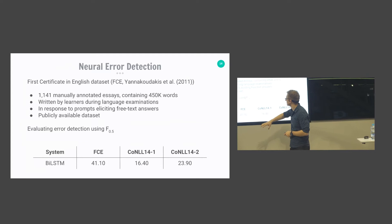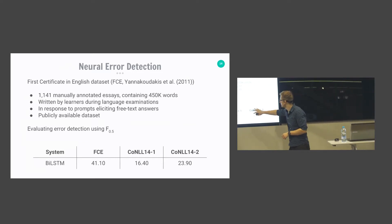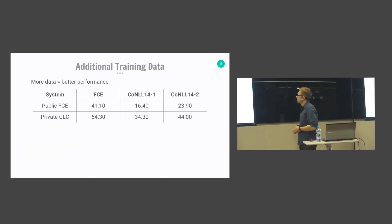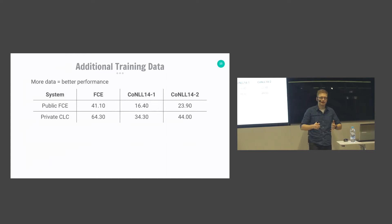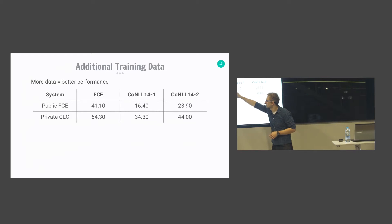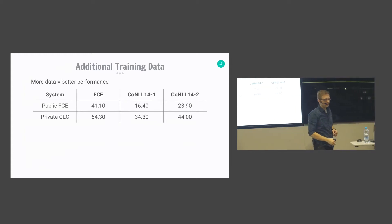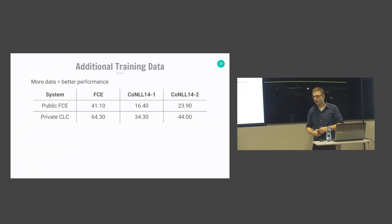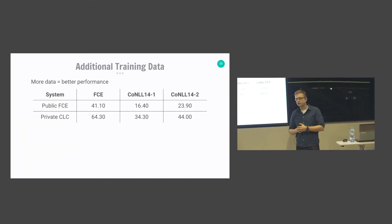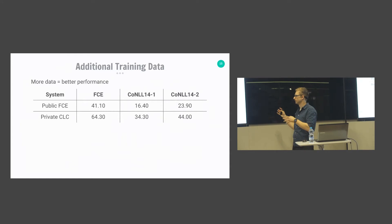Our baseline gets about 41% F0.5 on the FCE dataset. Training with the private Cambridge Learner Corpus achieves considerably better performance at 64%. However, that corpus is restricted by Cambridge English and not available for general use. So ideally we would want methods that allow us to improve performance without relying on this privately available corpus.